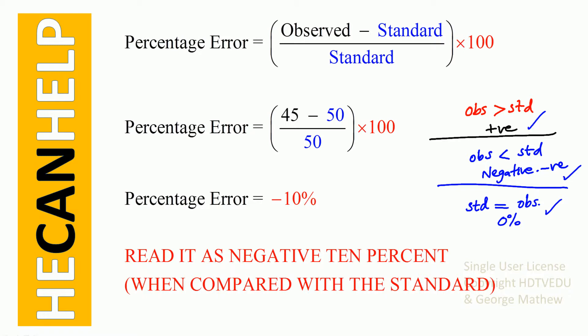So percentage error is observed minus standard divided by standard times 100. Joe determined the value to be 45 experimentally. What is written on the mass is the standard. So we have 45 minus 50, divided by 50, times 100.